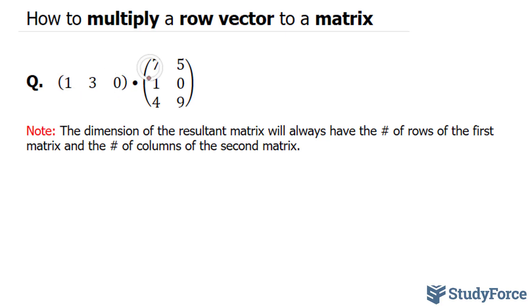The way you multiply this row vector to the matrix is you take the first number and multiply it to the first number in the first column. Then you take the three and multiply it to the second row of the first column. And finally, you take the zero and multiply it to the element in the third row of the first column.